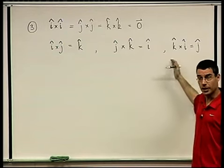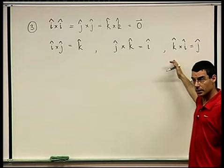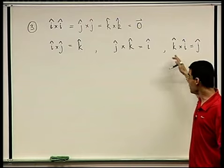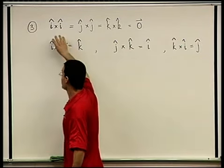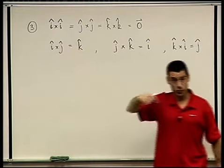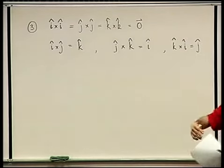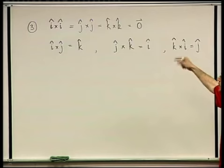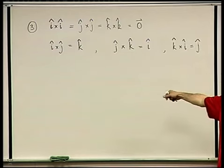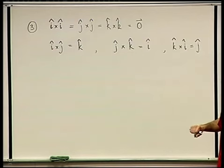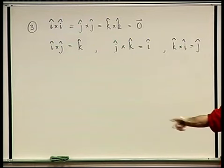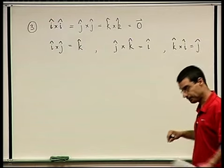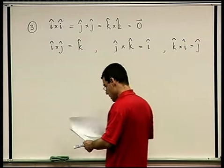We're going to use these results to express the cross product in coordinates. When we write two vectors coordinate-wise and do the cross product, we open up a long expression and these cross products of basis vectors will show up — exactly like the proof of the dot product for vectors written algebraically.